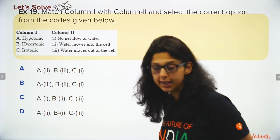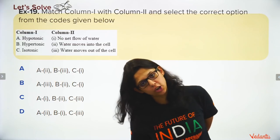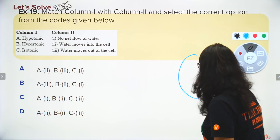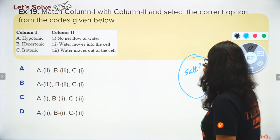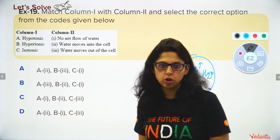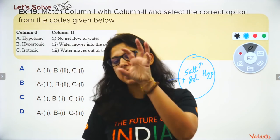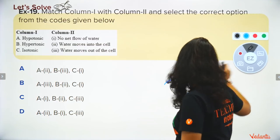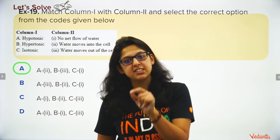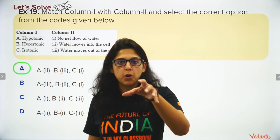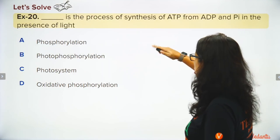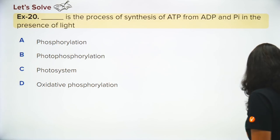Match the following: Hypertonic solution has more solute (salt) and less water. If a cell is placed in hypertonic solution, water moves out and the cell becomes flaccid. In hypotonic solution, water moves into the cell and it swells. In isotonic solution, the concentration is equal so there is no net movement.